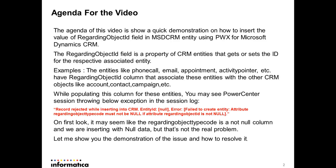How do entities like phone call, email, and appointment associate themselves with objects like account, contact, and campaign? They associate via the regarding object ID field, which tells CRM that data in the phone call entity refers to account, contact, or campaign. The same applies to email, appointment, and activity pointer.